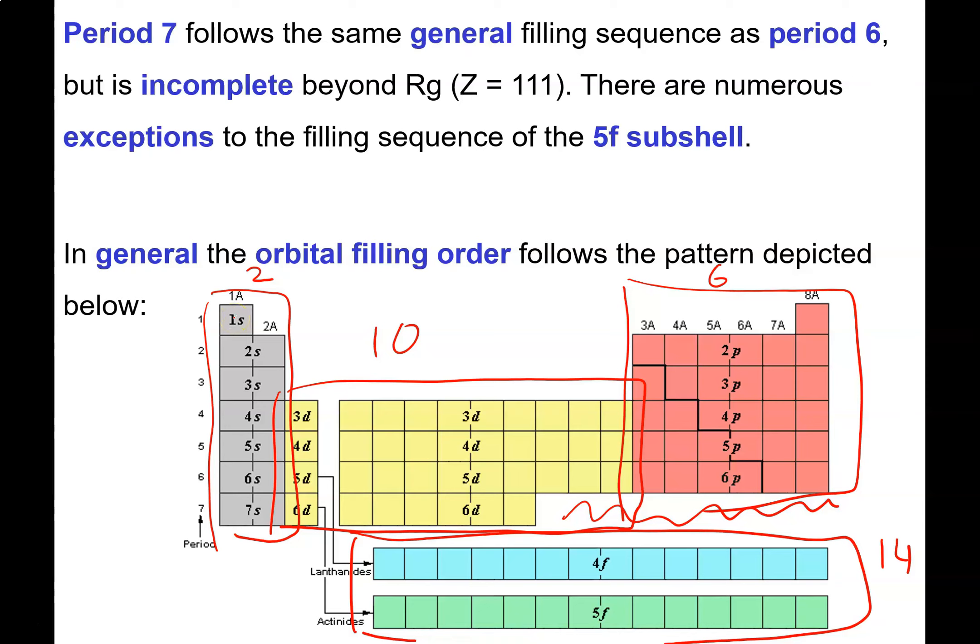We go 1S1, 1S2, 2S1, 2S2, 2P1, 2P2, 2P3, 2P4, 2P5, 2P6, 3S1, 3S2, 3P1, 3P2, 3P4, 3P5, 3P6, then 4S1, 4S2.